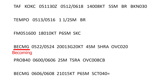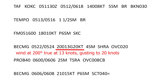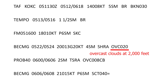The next block starts with the abbreviation BECMG, which denotes becoming — meaning the weather is turning into or changing to something else. So this would read: becoming on the 5th from 22 to 24 Zulu time, wind at 200 degrees at 13 knots gusting to 20 knots, visibility 4 statute miles, showers and rain, overcast sky with clouds at 2,000 feet.